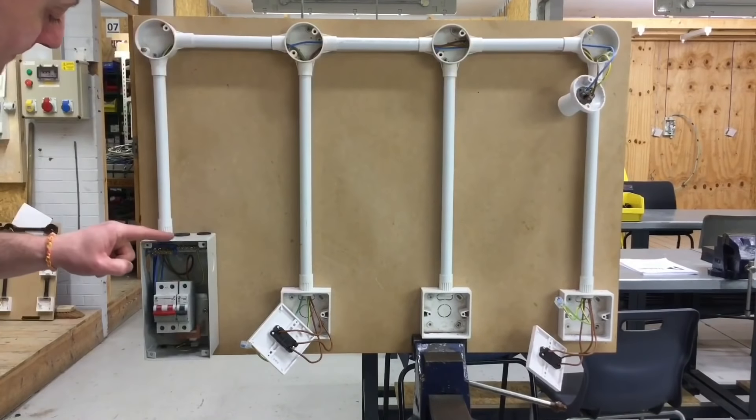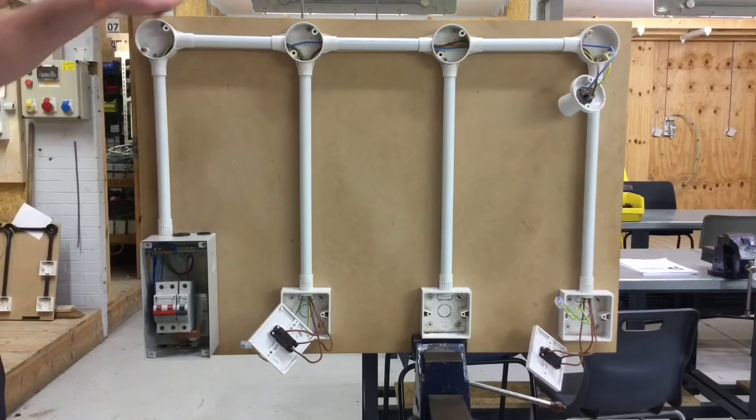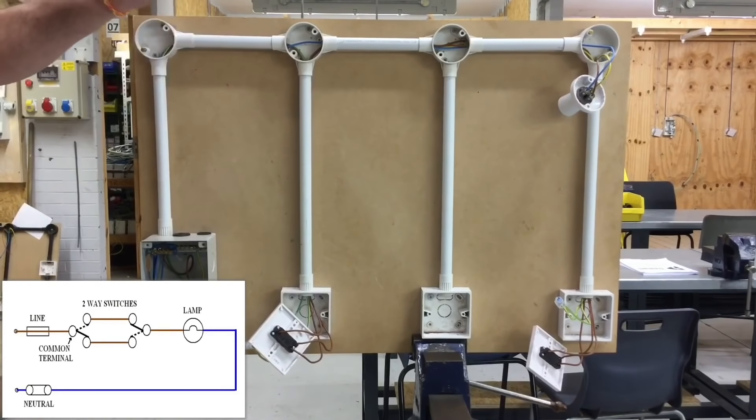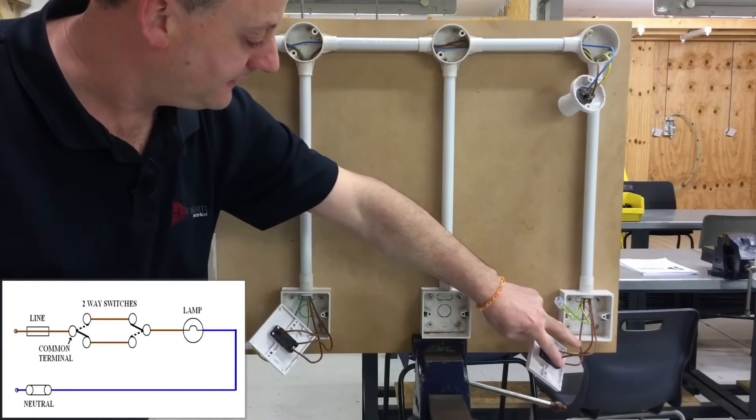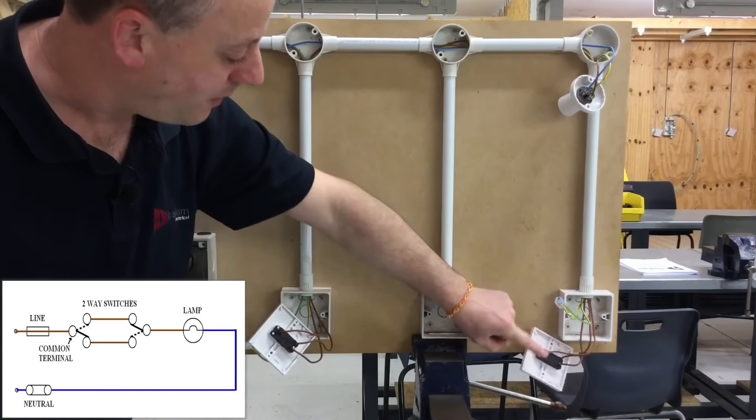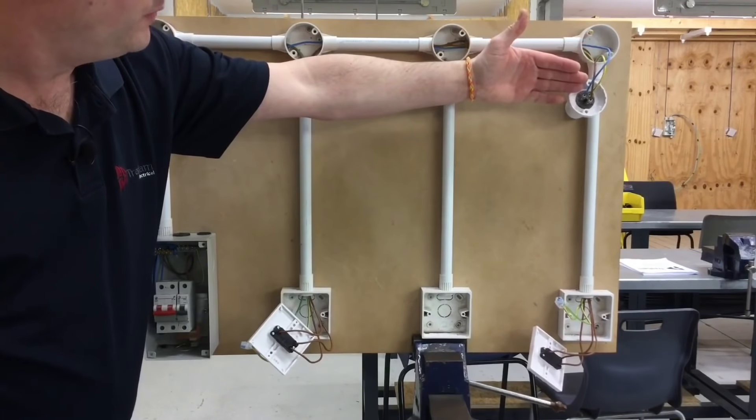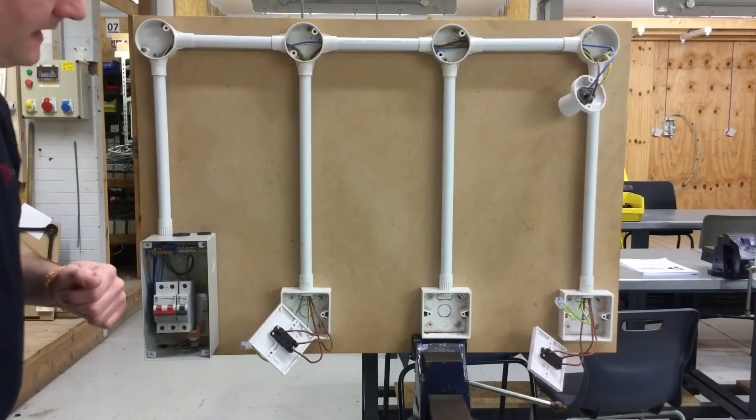Let's just recap that again. Line comes at the top of the breaker into common, two strappers come across from L1 and L2 to the other switch where they're connecting in L1 and L2, and from common we go up to the lighting point putting a switching line on it.